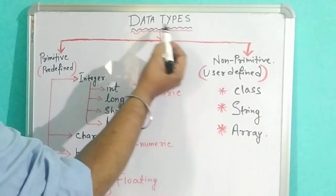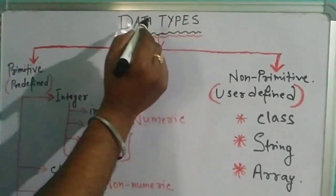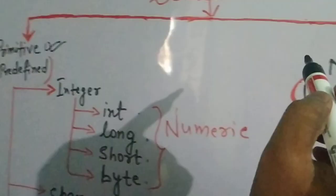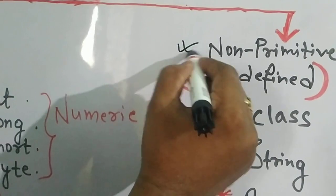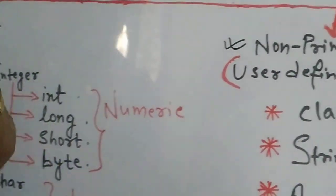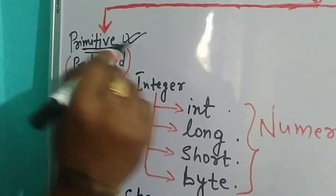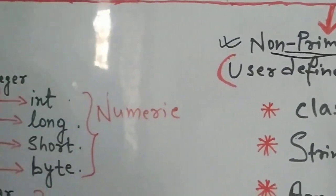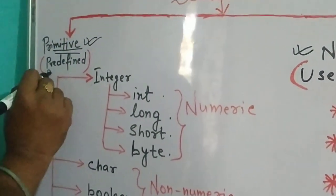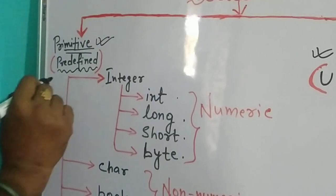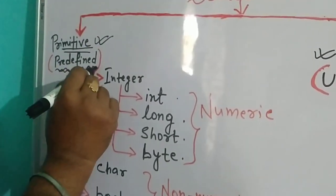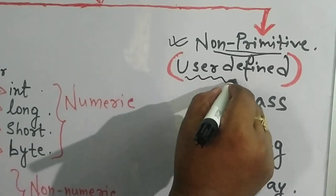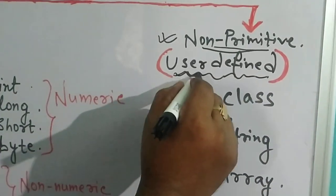Datatypes are of two types. First one is called primitive and second one is called non-primitive. Primitive means predefined — predefined datatypes are also called primitive. And non-primitive means user-defined.